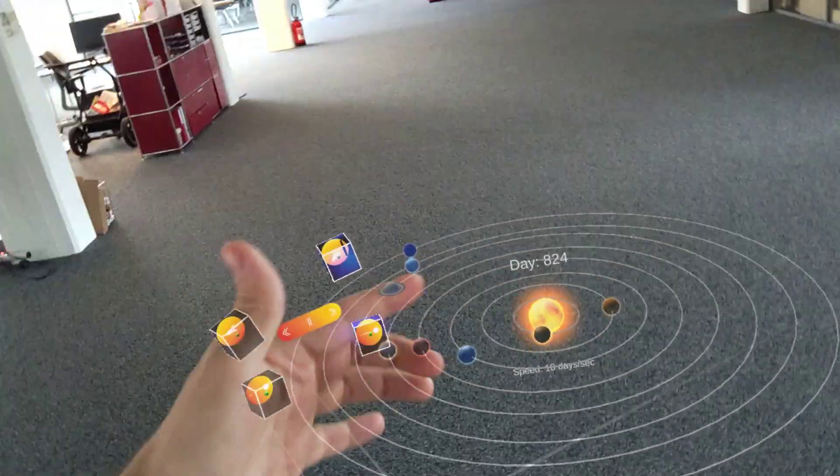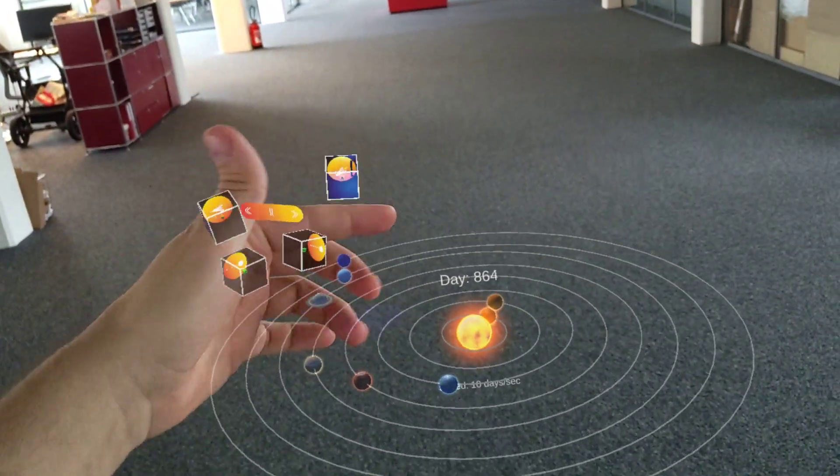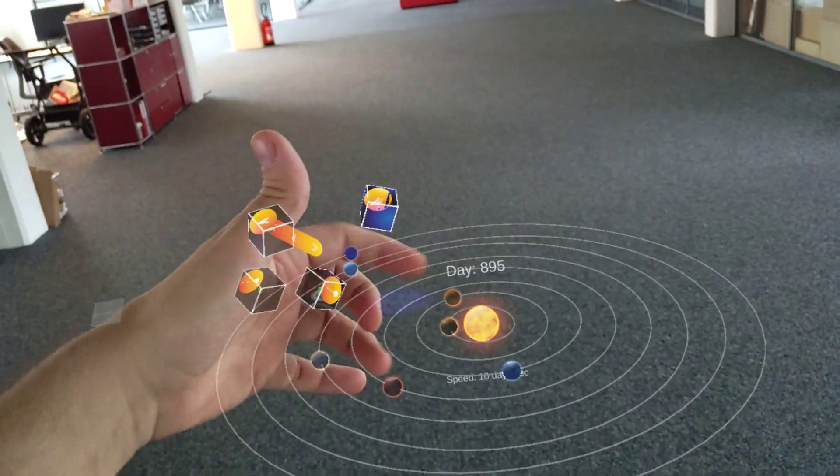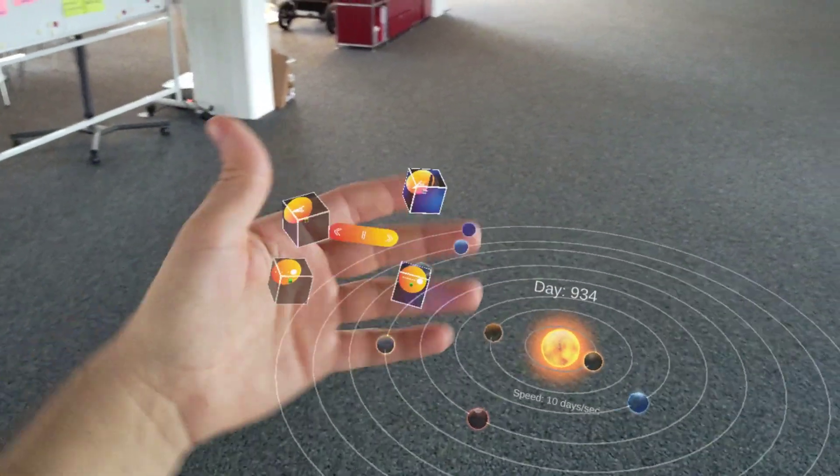So we're thinking about putting some UI elements on the hand. In the video some of the elements are off, but they track my index, middle and ring finger pretty perfectly when I'm using the app.